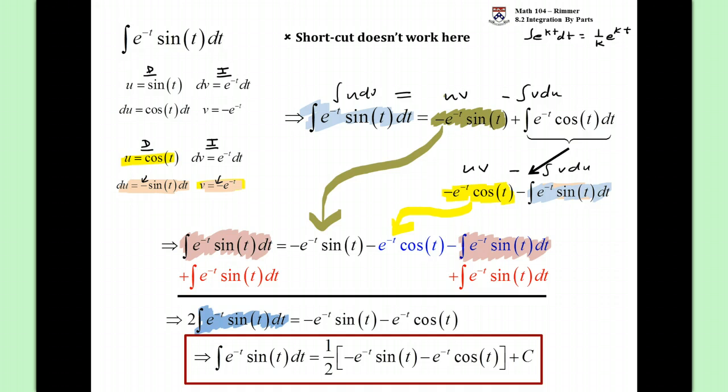And so, it's this circular argument. You start it with e and sine, e to negative t sine t. You traded it in for e to negative cosine t. You did it again. That traded you back to where you started at. But then you can just add over and solve it from there. So that's the circular argument that happens when you have an exponential and a sine or cosine mixed together. Great.